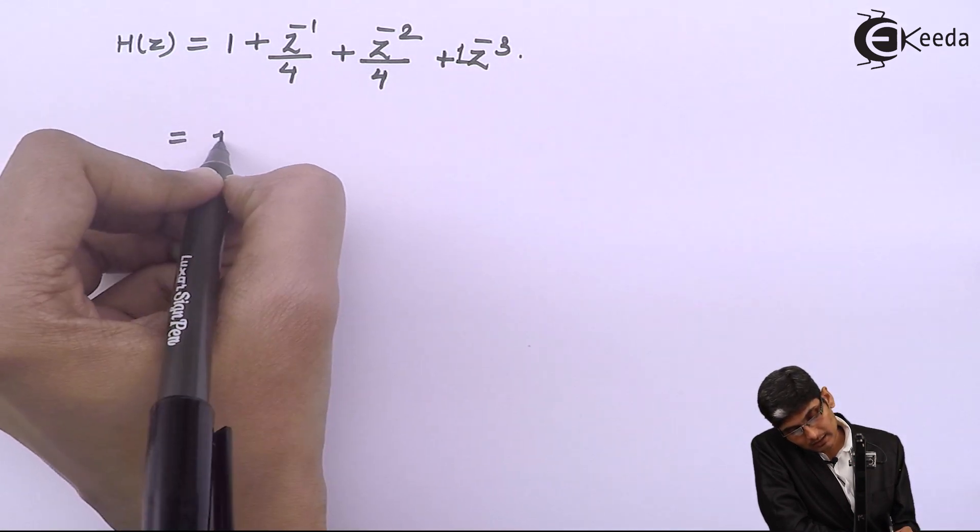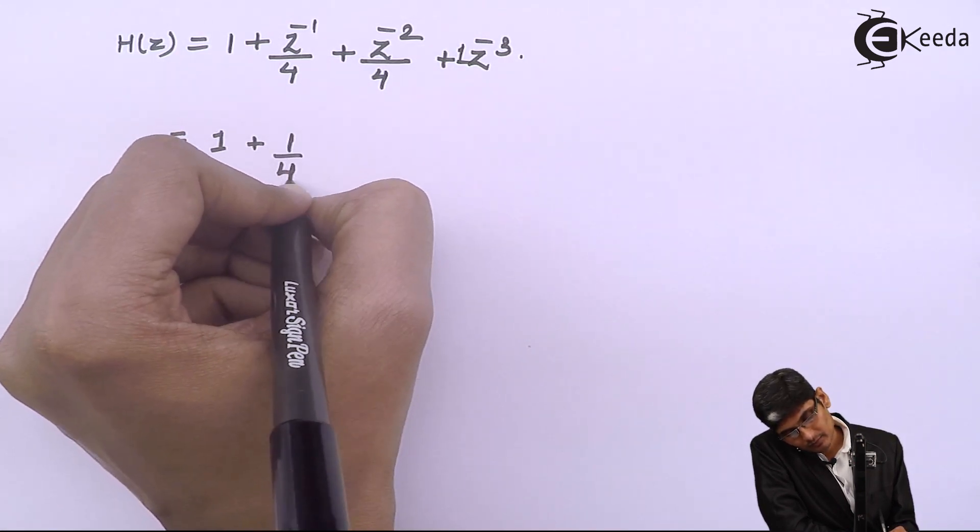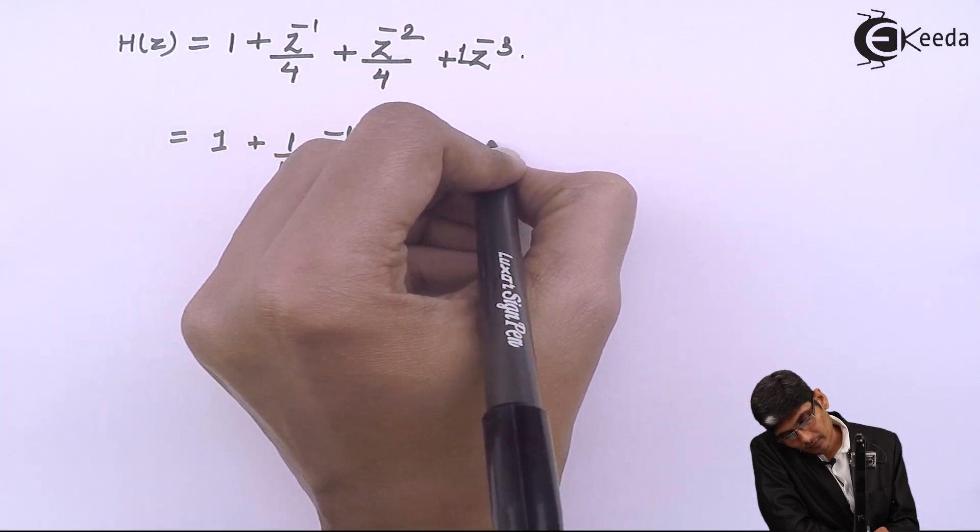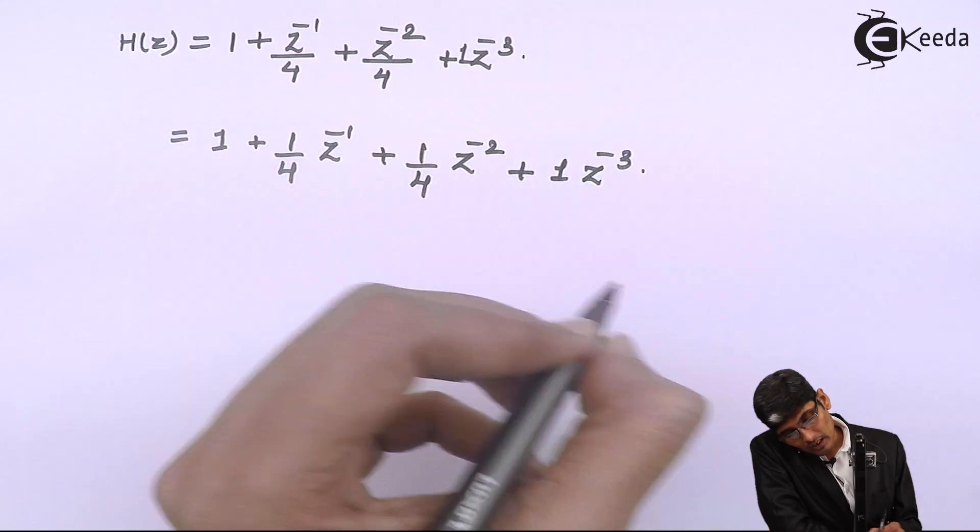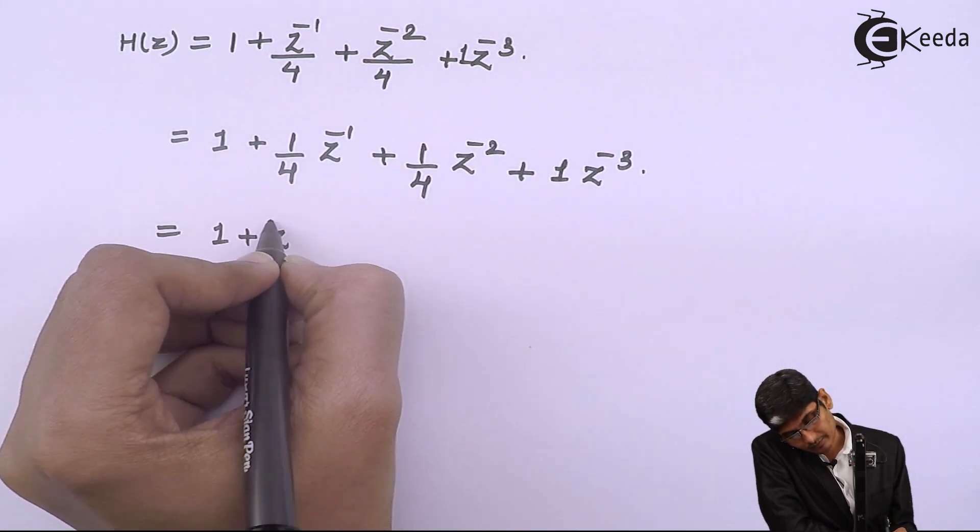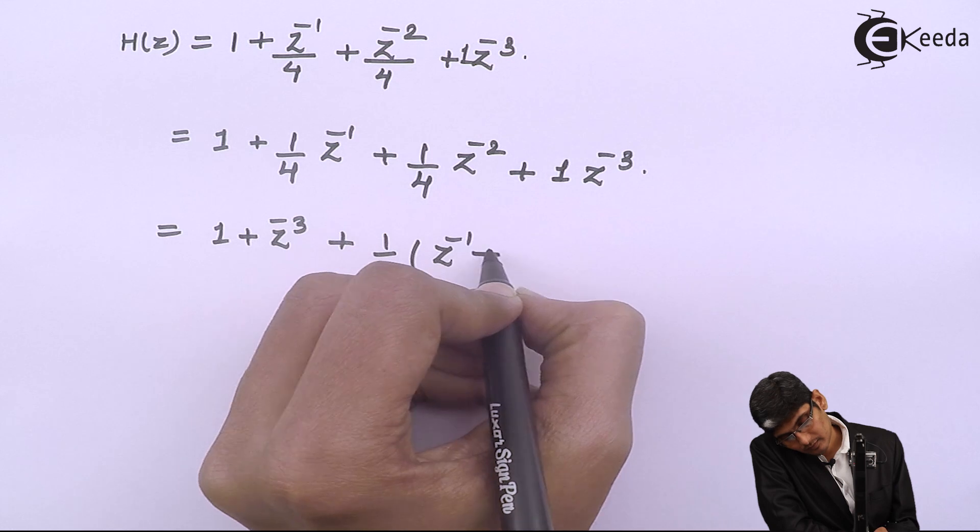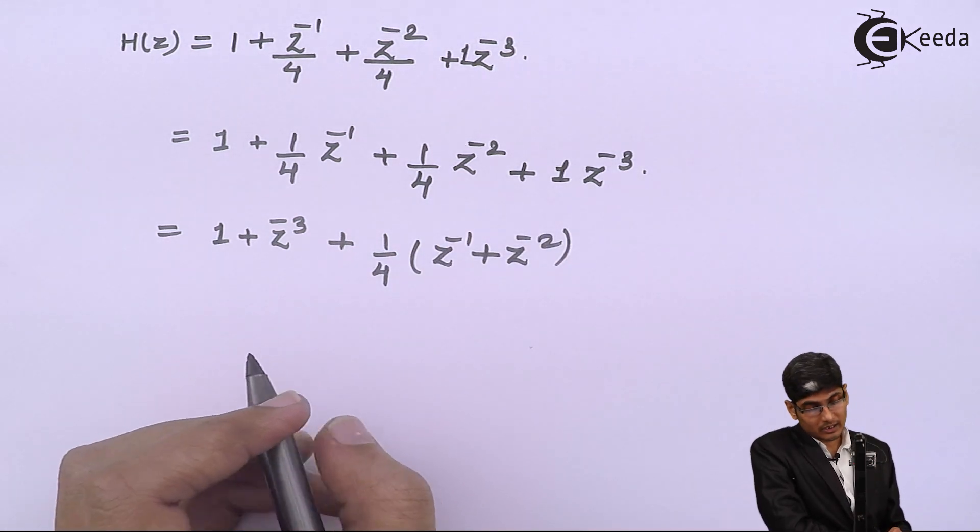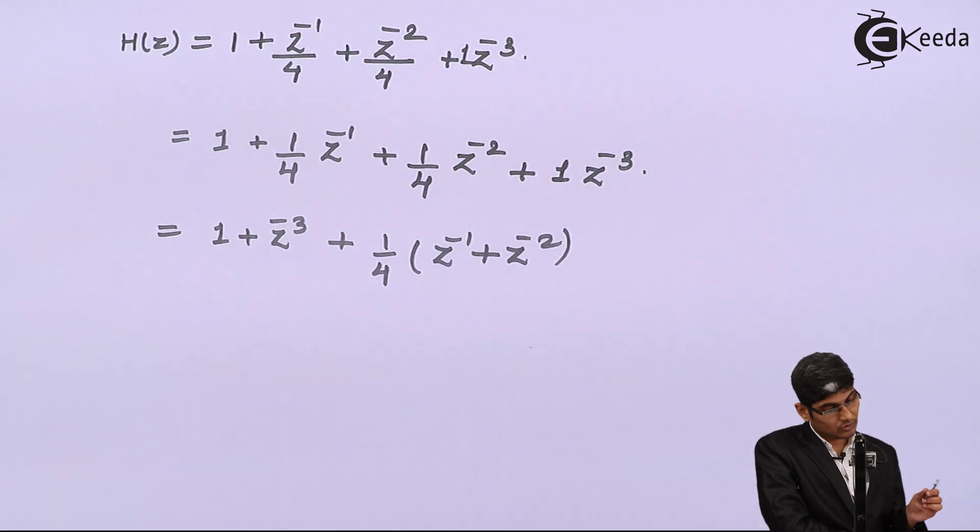If you cannot see it, let us rearrange it. Then bring the similar coefficient elements together. Once we have done that, now we are ready to draw the structure.